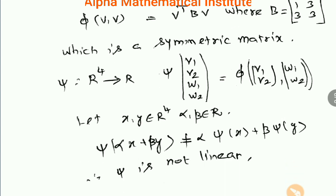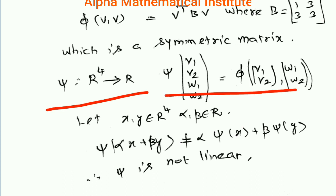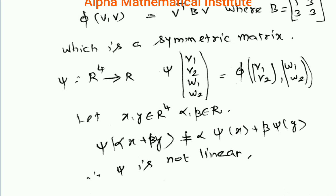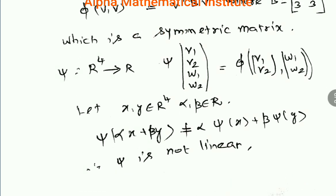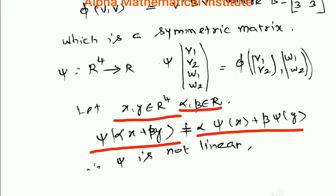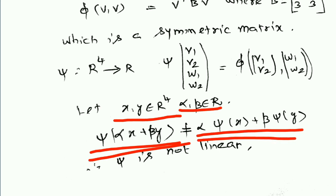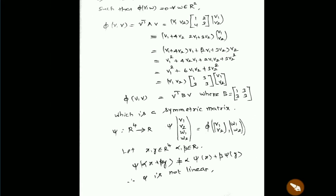Therefore, the third option is a correct option. Moving to the fourth option: ψ from R4 to R is defined by ψ(V1, V2, W1, W2) = φ((V1, V2), (W1, W2)). Taking two elements X, Y in R4 and scalars α, β in R, a simple calculation shows that ψ(αX + βY) is not equal to α·ψ(X) + β·ψ(Y). Therefore, ψ is not a linear function.